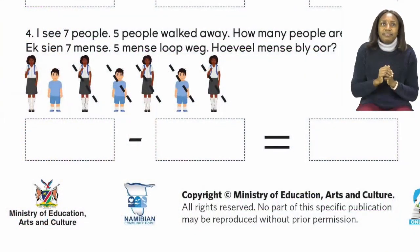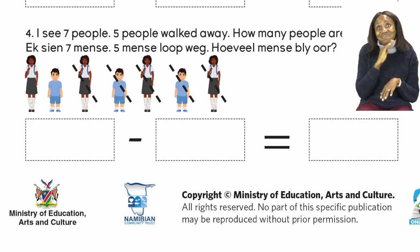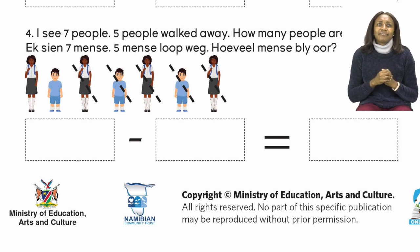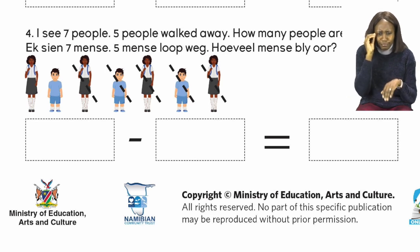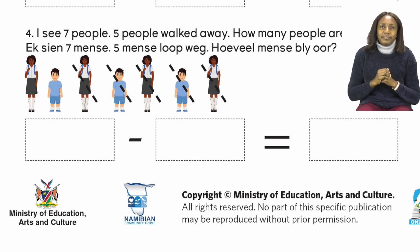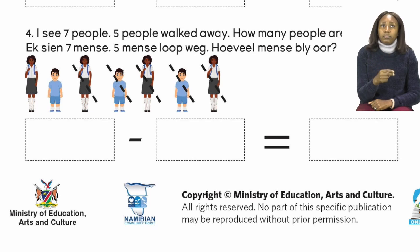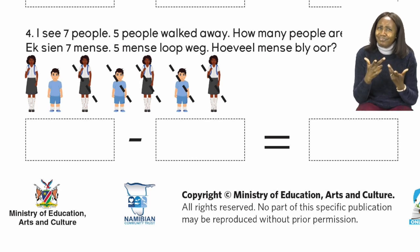On page 8 we are going to be doing the story sums. Now the problem solving sums that you can see all have pictures to help us. We are going to do the last one and remember when we start we need to read it twice so that we understand what the problem is and then we need to pick out our numbers. After that we need to count in order for us to find our answer. Number 4 says, I see 7 people. 5 people walked away. How many people are left?